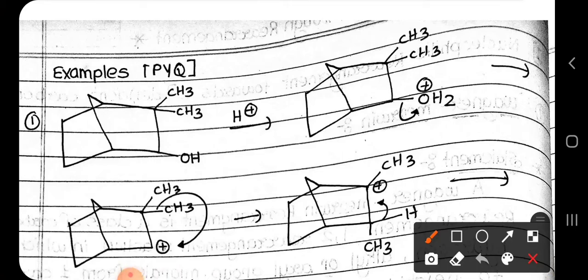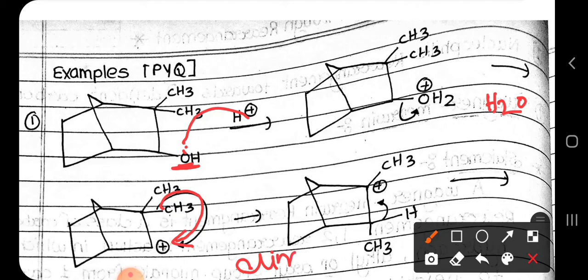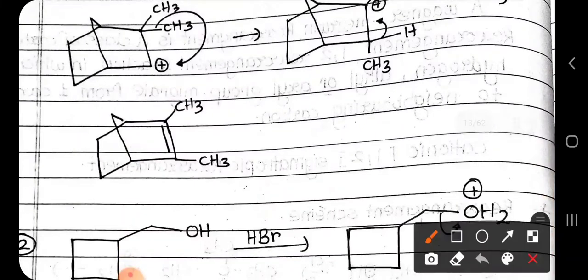Now let us discuss some examples. In this first example, an OH group is present containing a lone pair. Acidic medium is provided, so it will get protonated to form OH₂⁺, which leaves as a stable water molecule, generating a carbocation. The alkyl group migrates to the carbocation. Since there is no nucleophile in the system, simple elimination will take place, and we get the final product.